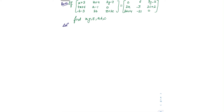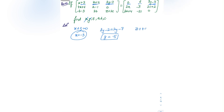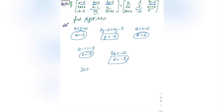Next example: if all these matrices are equal, find x, y, z, a, b, c. Comparing elements: x + 3 = 0 → x = −3. For y: 3y − 2 = 2y − 7 → y = −5. For z: z + 4 = 6 → z = 2. For a: a − 1 = −3 → a = −2. For b: 3b = −21 → b = −7. For c: 2c + 2 = 0 → 2c = −2 → c = −1.